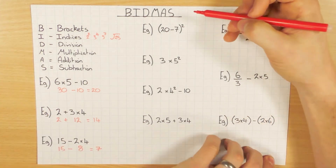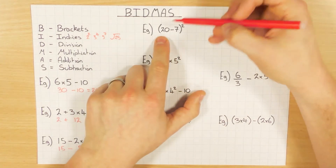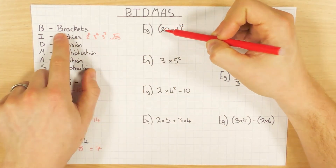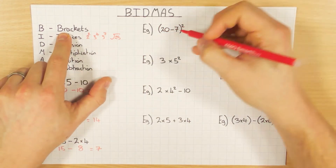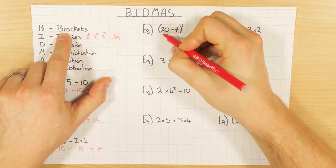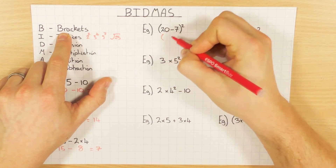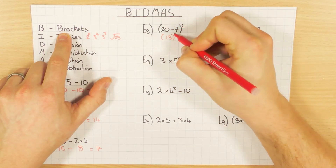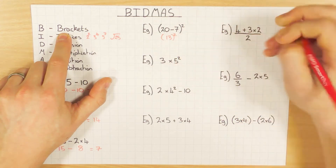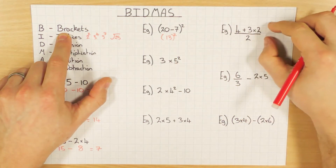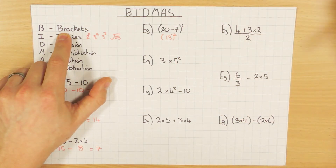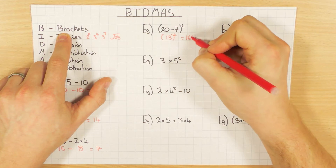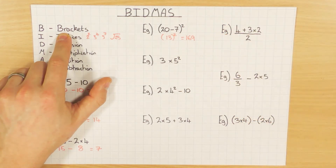A little bit more interesting this time — I have some brackets, so I need to do the brackets first. 20 take away 7 gives me 13, and then I bring the squared down. Then it's just 13 squared which is 169.